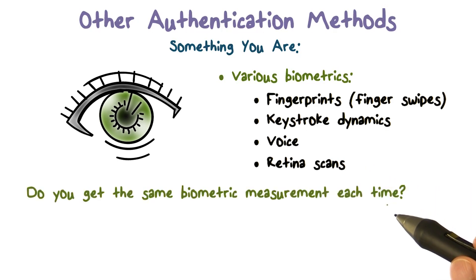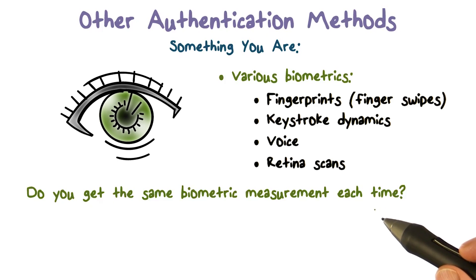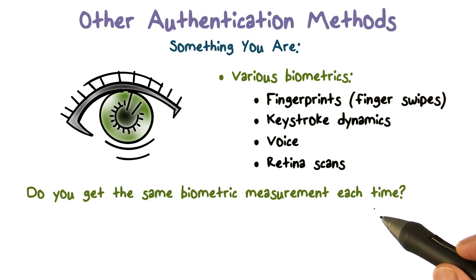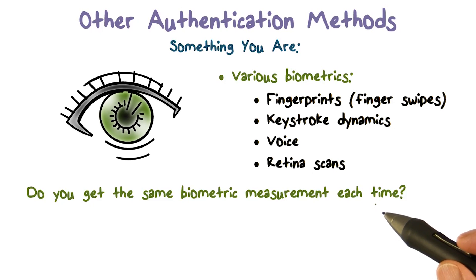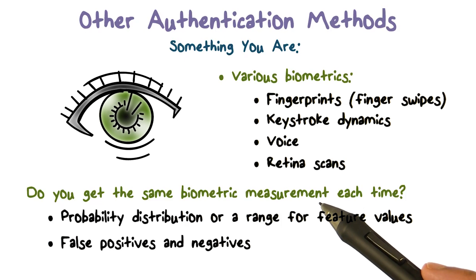So these are basically what you are. The way these work is that you're going to claim it's you and you're going to swipe your finger, or you talk in the case of voice. But the biometric measurement should be the same each time. If it's different, then we're going to have a false negative — it's you, but you're not able to log in because you have a cold and your voice is a little different.